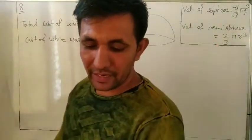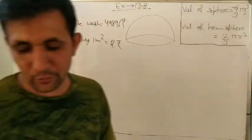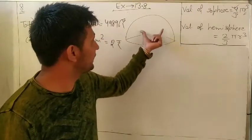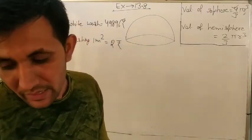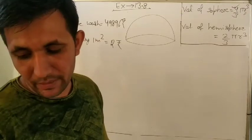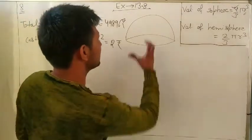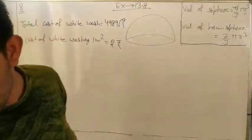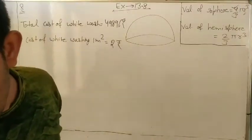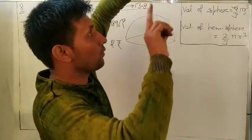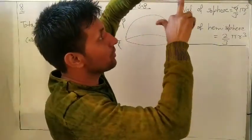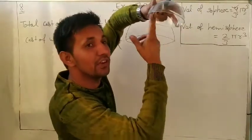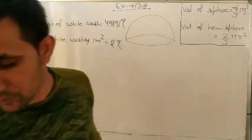In question number eight, it is given: a dome of a building in the form of a hemisphere. A dome is always like a hemisphere. From inside, when you whitewash it, we are whitewashing on its surface — so we are using its curved surface area.